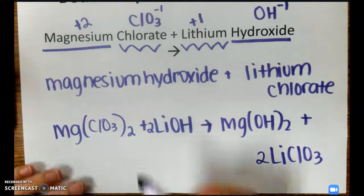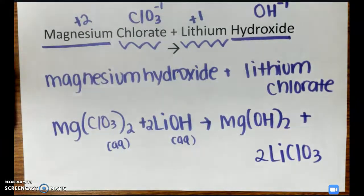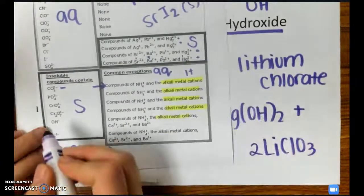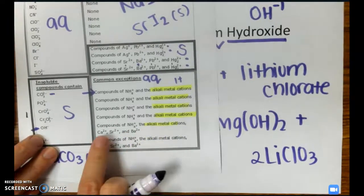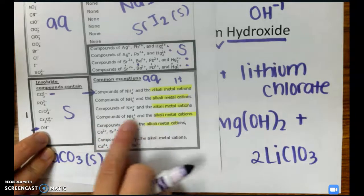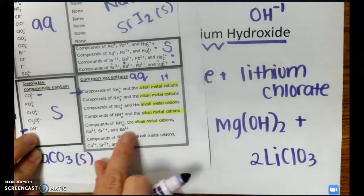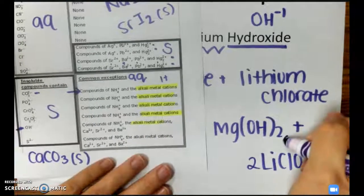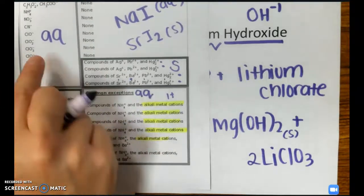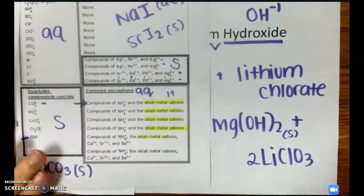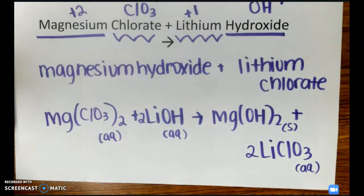Now for states of matter. Reactants are always aqueous — you can check the solubility rules. For products: magnesium hydroxide — hydroxides are usually solid unless paired with NH4, alkali metals, calcium, strontium, or barium. Hydroxide is with magnesium, which is not an alkali metal and not one of those exceptions, so it is solid. Lithium chlorate: chlorate is aqueous and has no exceptions, meaning every time you see chlorate it is always aqueous regardless of what it's paired with. That's how you write this double replacement reaction.